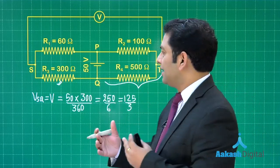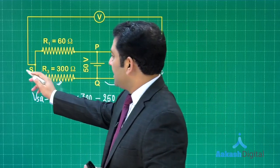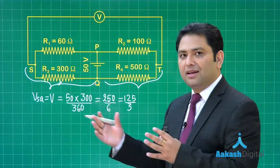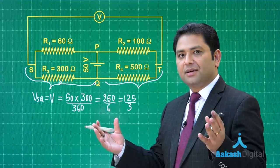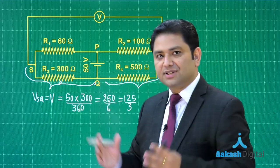So what would be the reading of the voltmeter? Simply the change in potential difference across sq will be the reading of the voltmeter. Think in this way, because originally this potential minus this potential, that was 0.